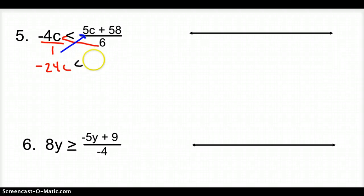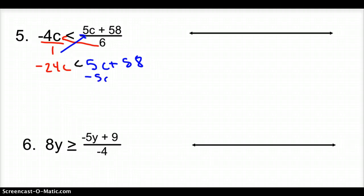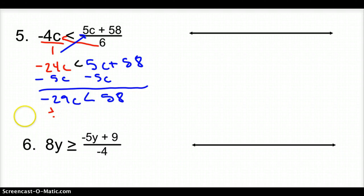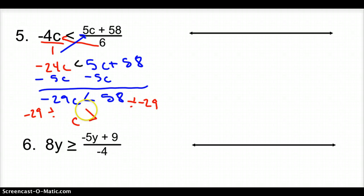Multiplying the other side gives 5c + 58. Treating it like an equal sign, subtract 5c to get the x's on the same side, leaving negative 29c is less than 58. Now divide by negative 29, and flip the sign because we divided by a negative.